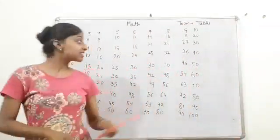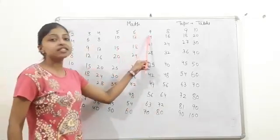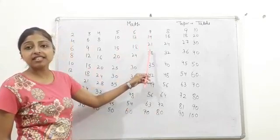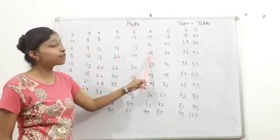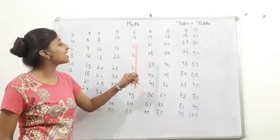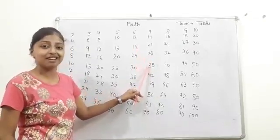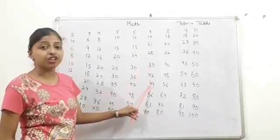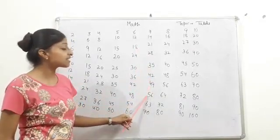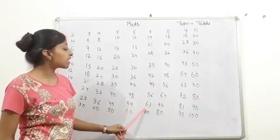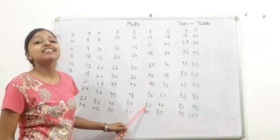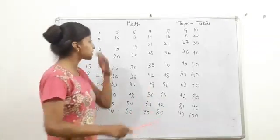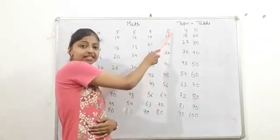7 ones are 7, 7 twos are 14, 7 threes are 21, 7 fours are 28, 7 fives are 38. Yes, 7 fives are 35, 7 sixes are 42, 7 sevens are 49, 7 eights are 56, 7 nines are 63, and 7 tens are 40.